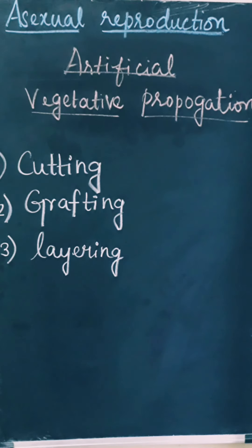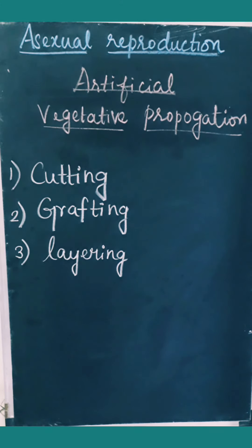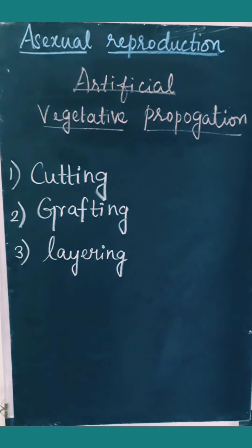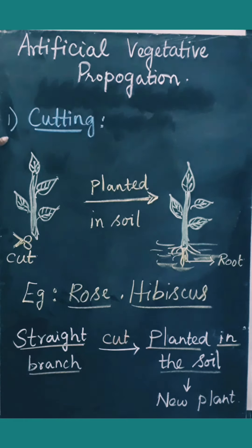In today's class we are going to see about asexual reproduction by artificial vegetative propagation. There are three methods involved: the first method is by cutting, the second method is by grafting, and the third method is by layering.